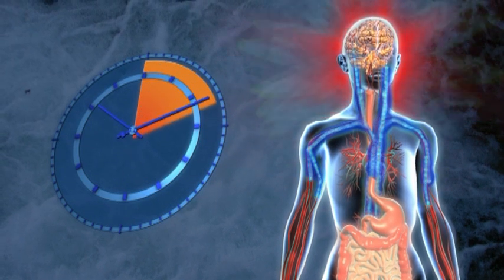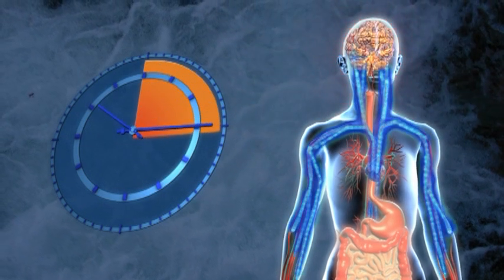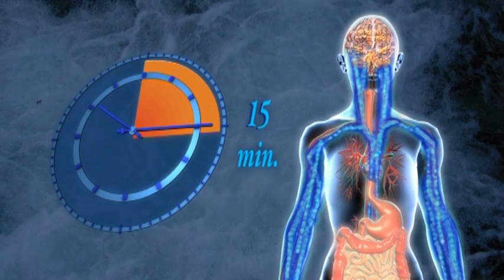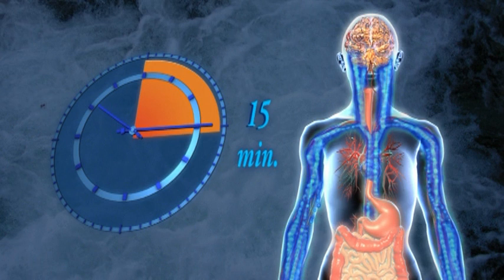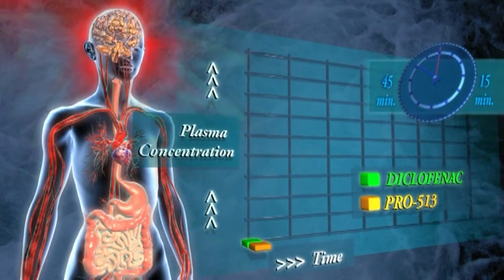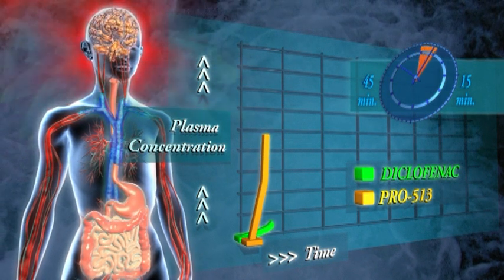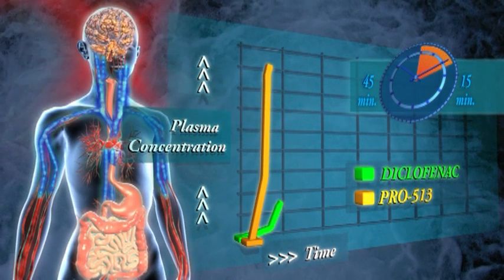Ongoing pharmacokinetic studies suggest that Pro513 provides unsurpassed speed of relief compared to unbuffered control. In clinical studies, Pro513 achieved peak plasma concentrations within 15 minutes, an improvement of 46%.